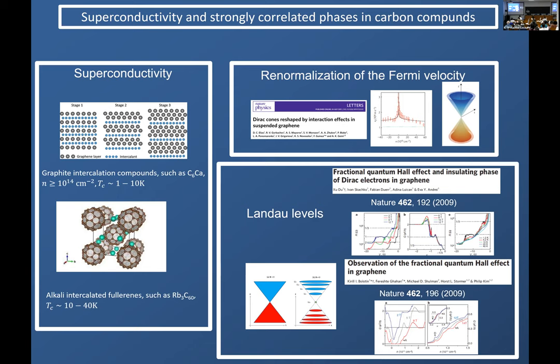Correlated states and superconductivity in carbon compounds were rare before the experiments at MIT from Pablo Jarillo-Herrero. People have found superconductivity in graphite and graphite intercalation compounds, which you can think of as heavily doped graphene layers. People have found the famous renormalization of the Fermi velocity due to the fact it's a Dirac system, and because of that long range Coulomb interactions are not screened. People have found correlated behavior in the quantum Hall regime in graphene, and also superconductivity in doped fullerenes up to relatively high critical temperatures.